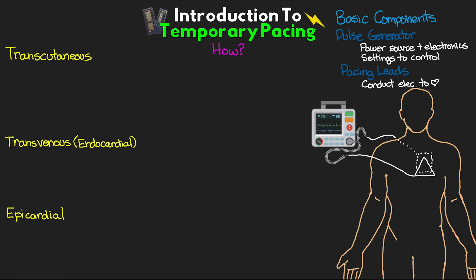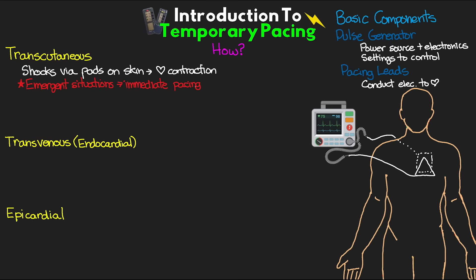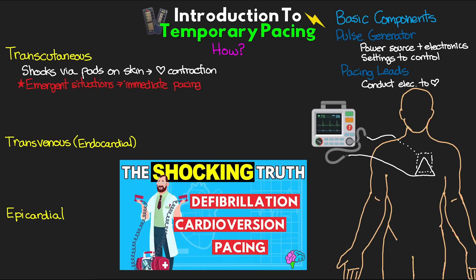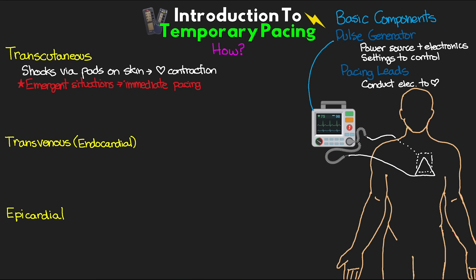For transcutaneous pacing, we provide electrical shocks via pads on the patient's skin to cause cardiac contraction. This technique is used in emergent situations that require immediate pacing. The defibrillator serves as our pulse generator and the pads are the leads that deliver the electrical energy. Because we're delivering the electrical energy to the heart via the patient's skin, this actually requires much more energy than the other methods, and should only be used as a short-term temporary measure.